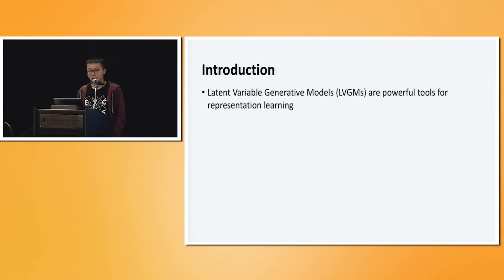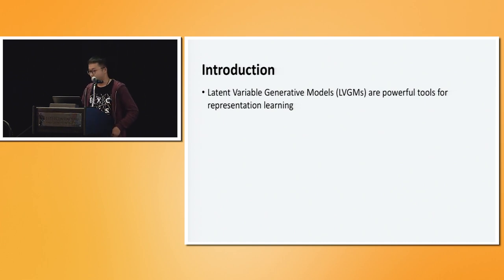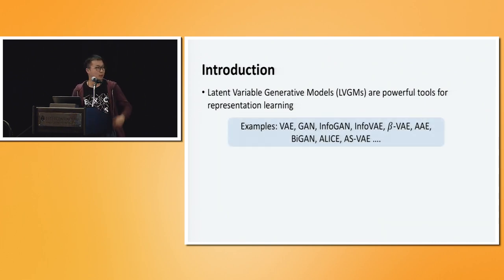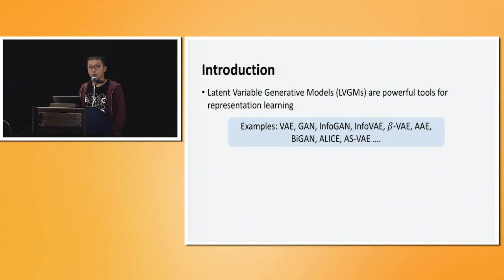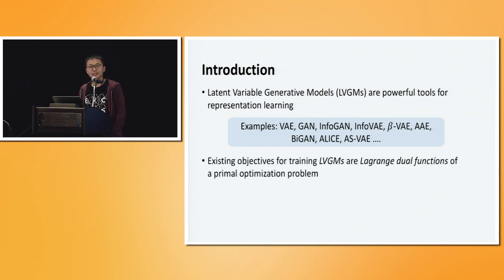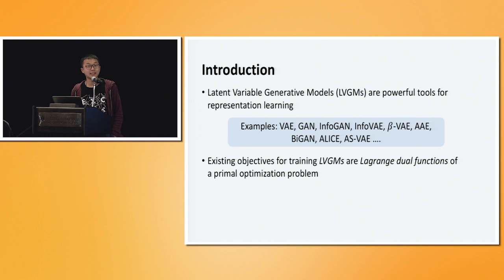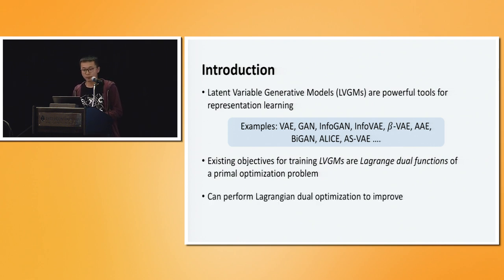Latent variable generative models are very powerful tools for representation learning and have attracted a lot of attention. People have come up with a huge number of different models, such as variational encoders, GANs, and a lot of different variants. What we aim to show in this paper is that these models are actually very similar in that they are all Lagrangian dual functions of the same primal optimization problem. Based on this observation, we can categorize and organize all of these models, and that also allows us to perform Lagrangian dual optimization to improve them.